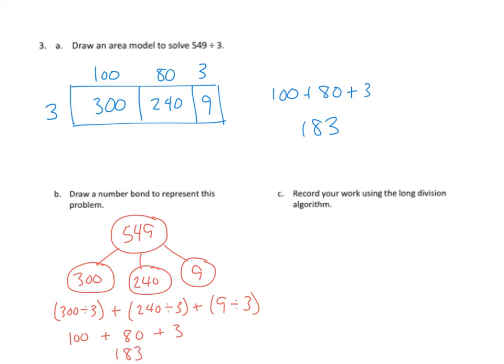We'll switch to a black pen and do the last piece. The last piece asks us, and we'll read part C together, record your work using the long division algorithm. So now we've got the standard algorithm of division. So let's do that again. We'll do 549 divided by three. And when we do the standard algorithm, we look at each of the units, the largest unit first, and we ask ourselves, 500, how many hundreds could we multiply by three and still fit underneath that?